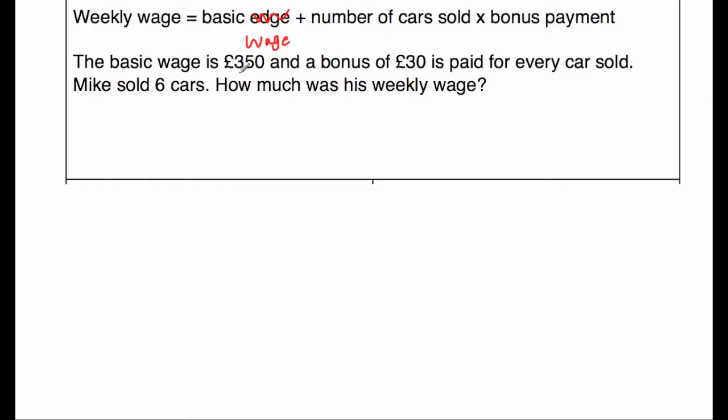So here we've got the basic wage is 350 pounds. And it says that a bonus of 30 pounds is paid for every car sold and Mike sold six cars. So we've got 350 pounds plus the number of cars, which is six times by 30. So we're going to times the 30 pounds by six first of all, to work out what his bonus will be.